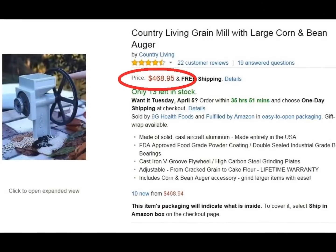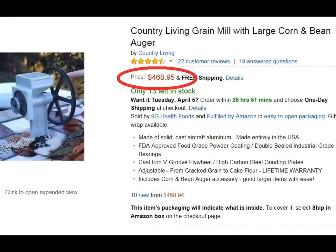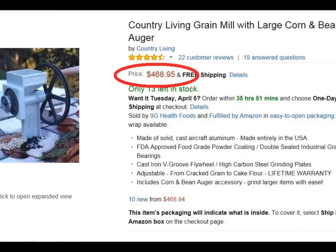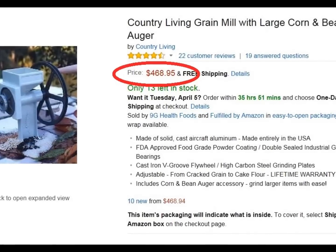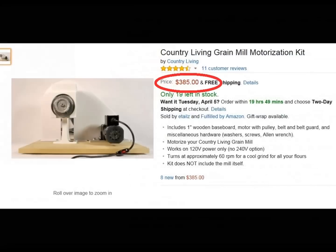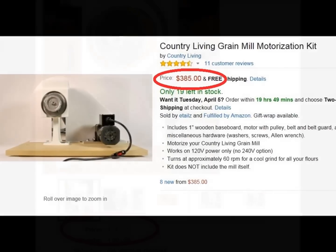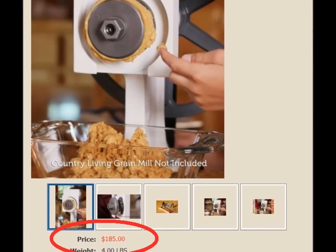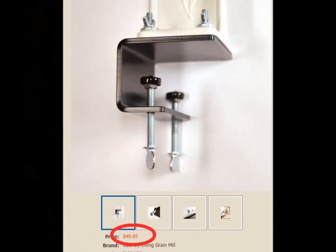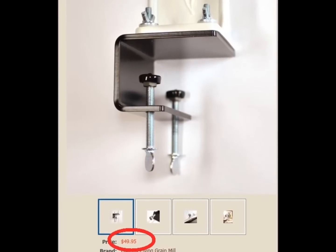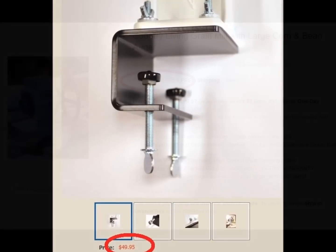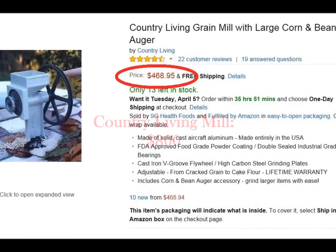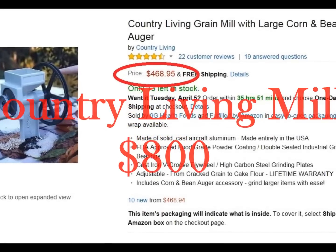Now, I debated on getting the Country Living Mill, which seems to be the best of the best. But just the mill itself was almost $500. Then to get the motor would have been another $100 to $400. Then to get the burrs that would make peanut butter would cost another $185. And then to get the countertop clamps, it still would have cost another $50. So in the end, the Country Living Mill would have cost me over $800 to get everything that I wanted.